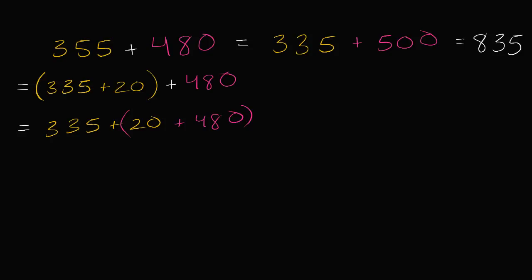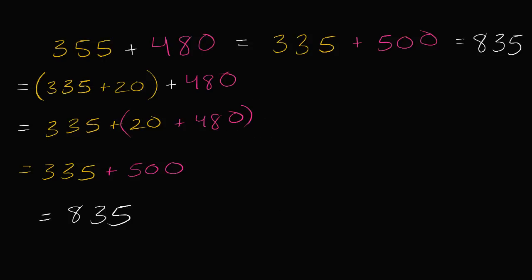So, I could add these two characters first. And so then, I'm going to be left with, this is going to be equal to 335 plus, what's 20 plus 480? Well, that was the whole point. I picked 20 so that I can get to 500. 20 plus 480 is going to be 500. And then, now you can add them. This is going to be 835. So, this is just a longer way of saying what I did here. I took 20 from 355 so I can make the 480 into a 500. Let's do a couple more examples of this.